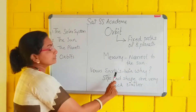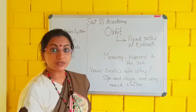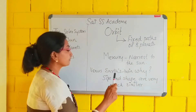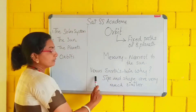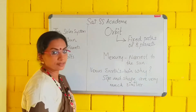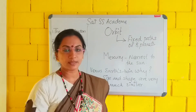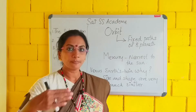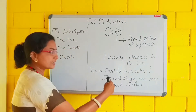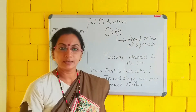Venus is known as Earth's twin. Why? Because the Earth and Venus — both planets' size and shape are very much similar. Just like we know twins with the same similarity, Venus and Earth's size and shape are very much similar. That is why Venus is called Earth's twin.